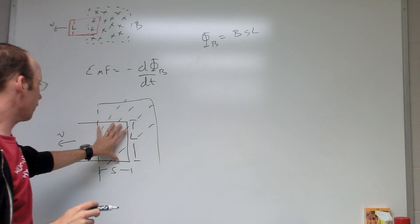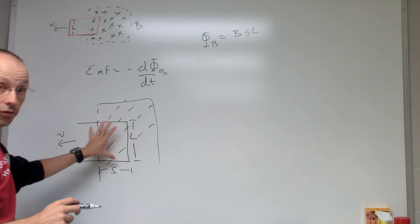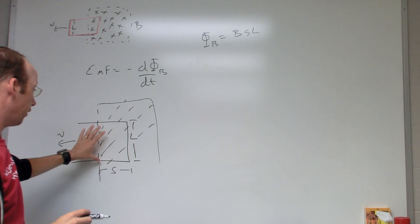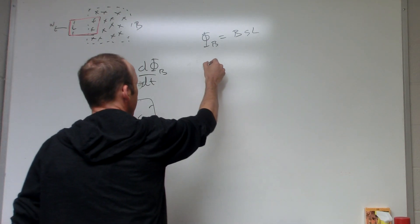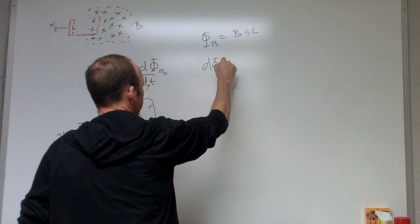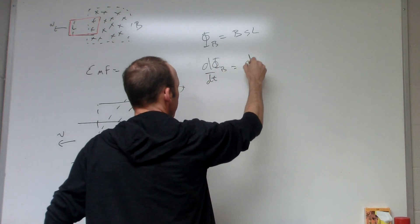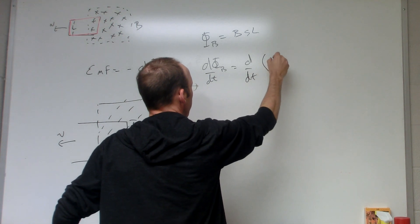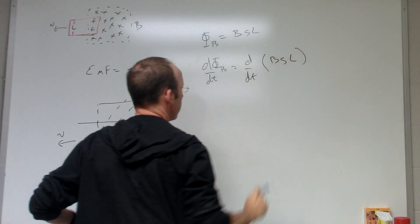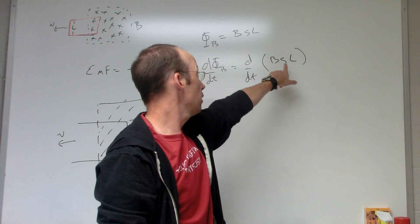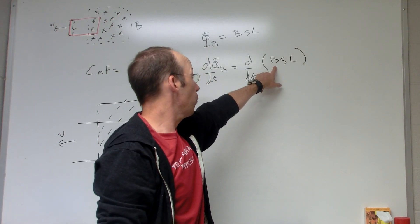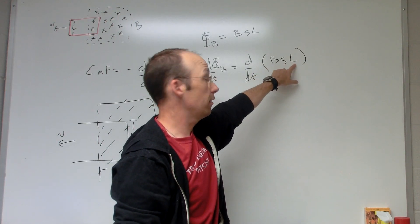Now this flux is going to change because the area is changing. So how fast is the area changing? Well, I can just take the derivative of the flux with respect to time, and I get d/dt of BsL. It's possible that all these things could change with time, but we have a constant magnetic field and the length is constant.